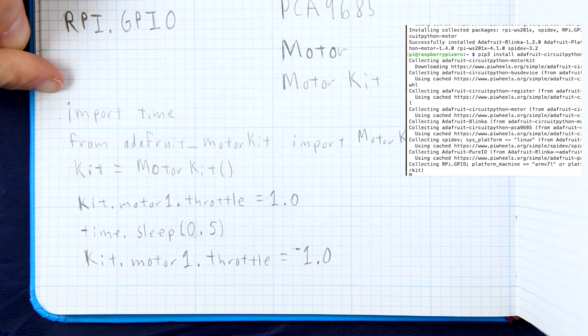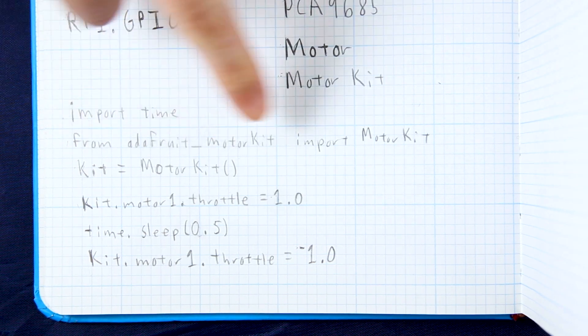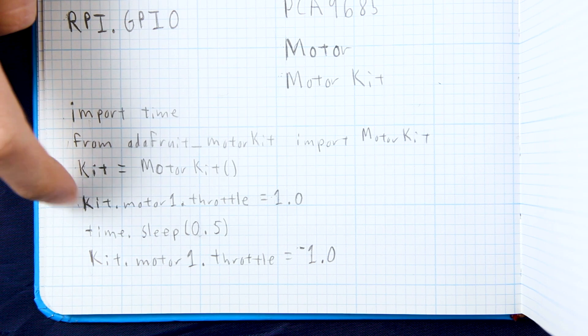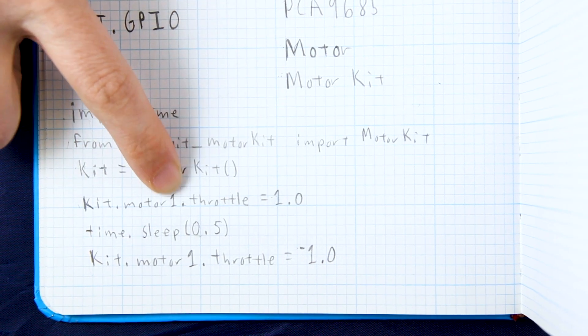When we install that this is all the code you have to write. Just import time in case you want to sleep between your motor commands. And then you import the motor kit and then you make a class and assign it to kit. And you just do kit.motor and it could be motor 1, 2, 3 or 4, dot throttle.